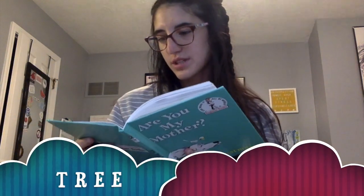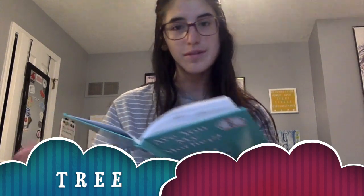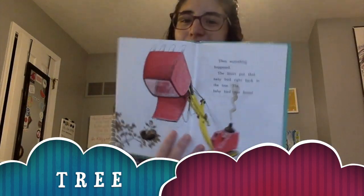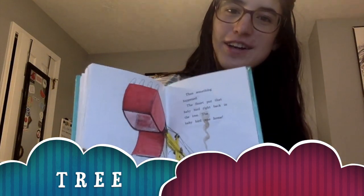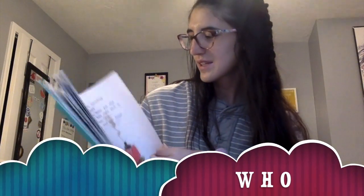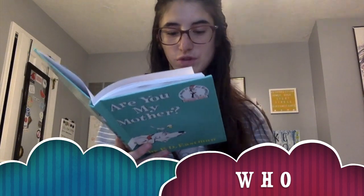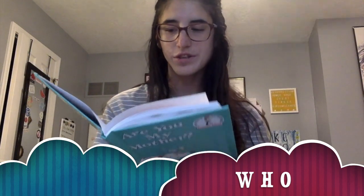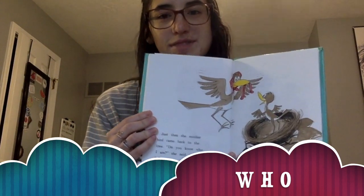Then something happened. The snort put that baby bird right back in the tree. The baby bird was home. The sight word is tree — T-R-E-E. Just then, the mother bird came back to the tree. Do you know who I am? she said to her baby. The sight word is who — W-H-O.